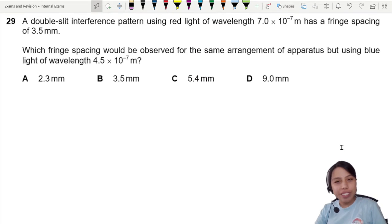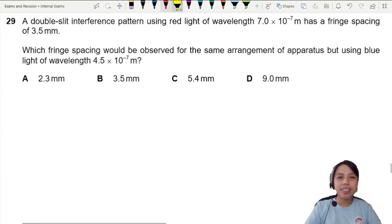The double slit interference pattern uses red light wavelength 700 nanometers with a fringe spacing x. Which fringe spacing will be observed for the same apparatus but using blue light?